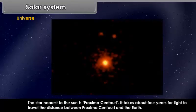The star nearest to the sun is Proxima Centauri. It takes about four years for light to travel the distance between Proxima Centauri and the Earth.